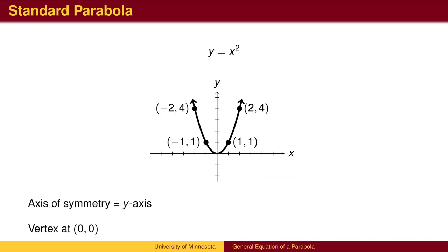From the vertex, there are points that go left and right 1 and up 1, and also points that go left and right 2 up 4. We will use these points (1,1) and (2,4) to help us with other graphs.